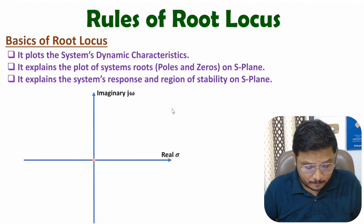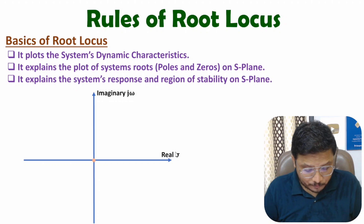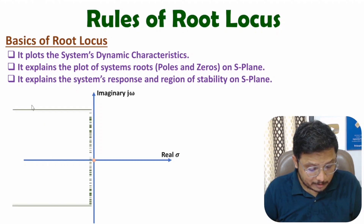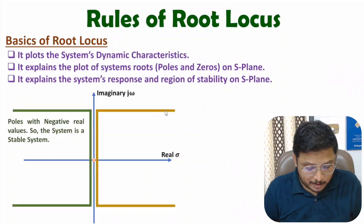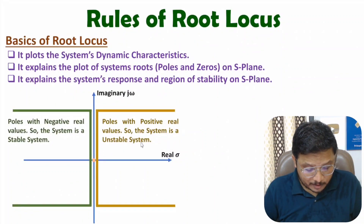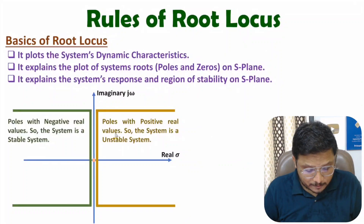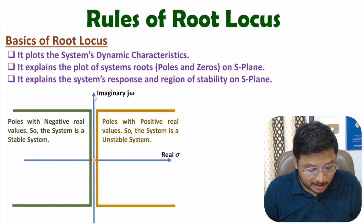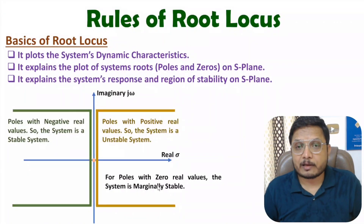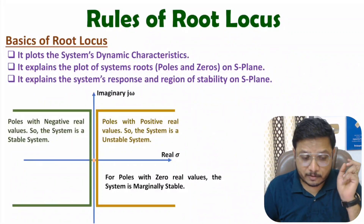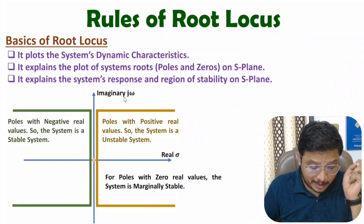Here we have the s-plane. On the vertical axis we have the imaginary value and on the horizontal axis we have the real value. If you have roots in the left region, then the system is stable. If we have roots on the right of the plane, the system is unstable. Roots on the right have positive real values and roots on the left have negative real values. So based on the region we can identify stability. If roots are on the imaginary axis then the system will be marginally stable. We will be plotting the system's dynamic characteristics using root locus on the s-plane.